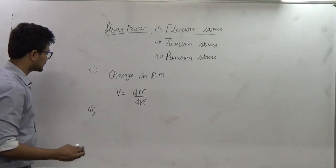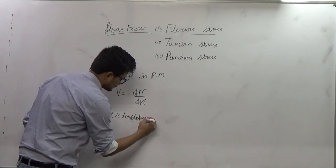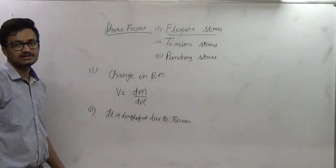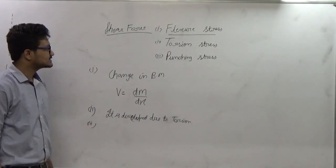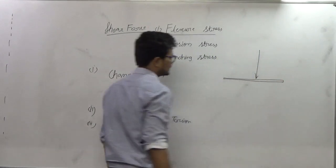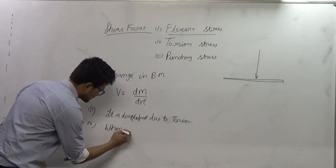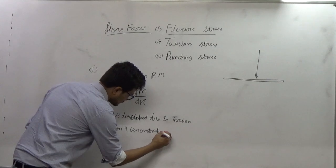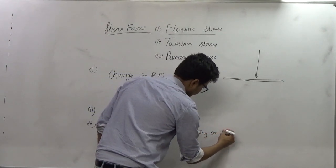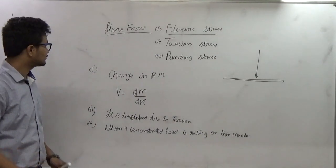The second is torsion stress — it is developed due to torsion; we will see it in detail in the next chapter. The third one is punching stress, where a concentrated load is acting on a thin member, and the stress corresponding to that concentrated load is known as punching stress. So these three are the types of stresses developed due to shear.